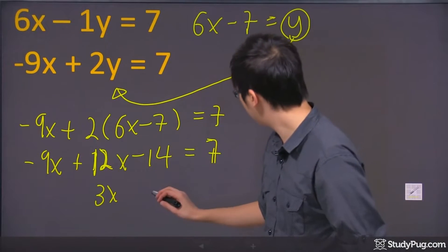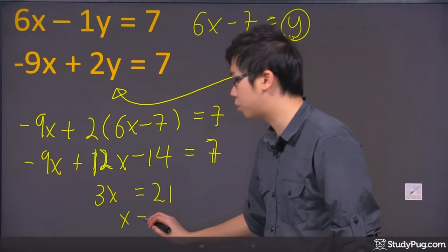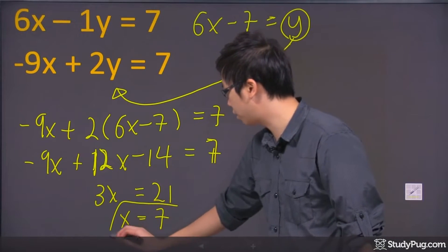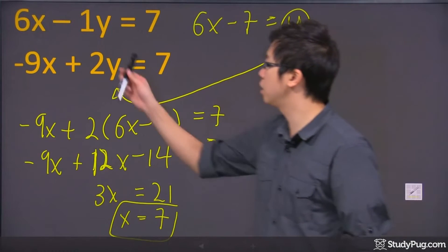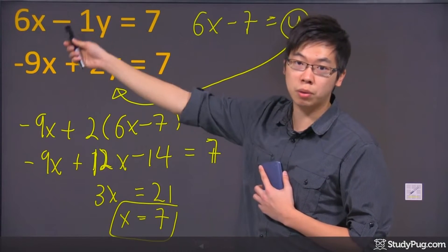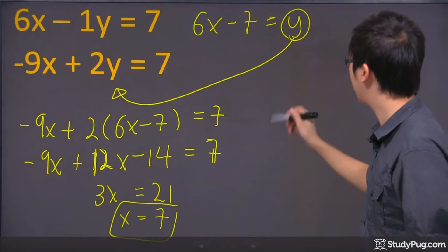So and then you get yourself x equals to just a 7. So you found out your x. So after that, you figure out one of the variables, you plug it back into your original equation up here. Either the first one or the second one, it doesn't matter. Let's say you do the first one.